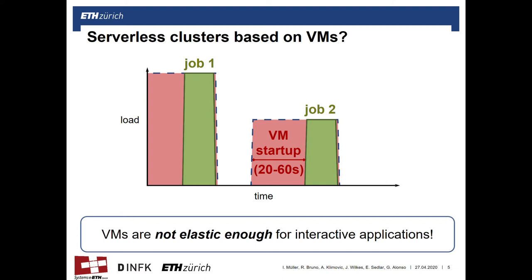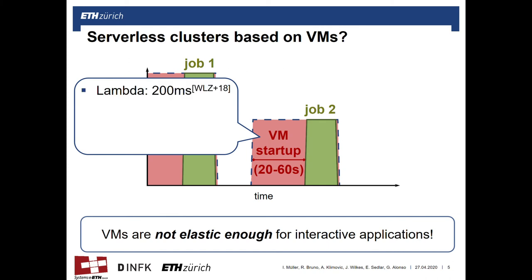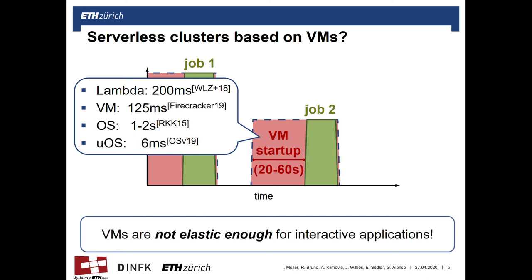However, we think that there is hope and I want to provide you with a few data points. Serverless functions currently start in the order of 200 milliseconds, and it's interesting that Amazon is revealing and even sharing the technology they're using to do that. It's a virtual machine manager called Firecracker that is able to start virtual machines in the order of 100 milliseconds. It's also possible to start an optimized Linux distribution in the order of one to two seconds, and unikernels in much less time than that. So on the one side we know how to start virtual machines including the operating system within a few seconds, but on the other side cloud-based virtual machine deployment takes an order of magnitude more.